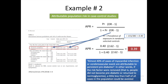This is interpreted as: almost 40% of cases of myocardial infarction or cerebrovascular events are attributable to persisting prediabetes. In other words, if the risk factor were removed — that is, people did not become prediabetic or returned to normal glycemia — a little less than half of all cases in the population could be avoided. The same formula can be applied to studies where the outcome is a time-to-event variable and where the estimator is a hazard ratio. There are also formulas to calculate the confidence intervals for the APR.